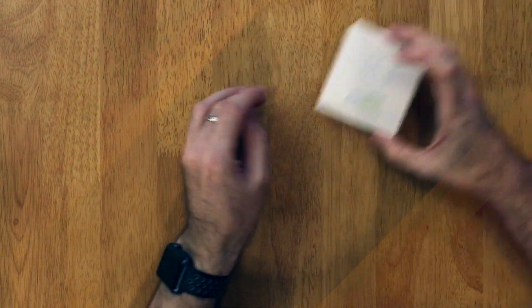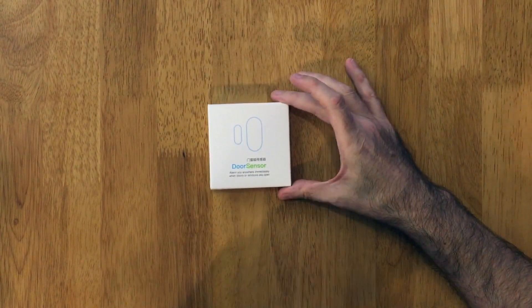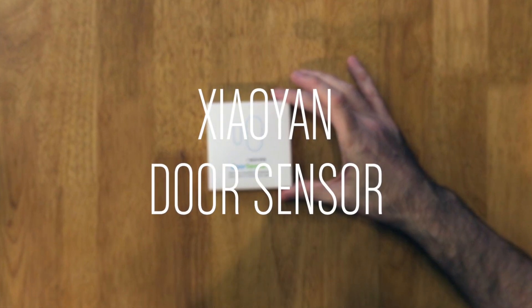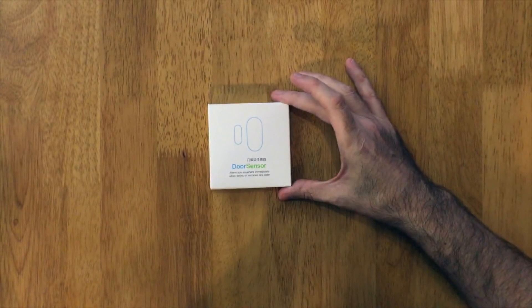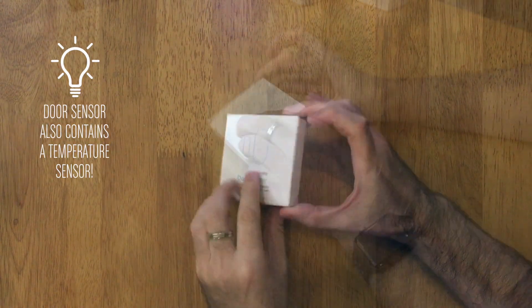Moving on to the second of our five devices, we've got the Xiaoyan door sensor. It's more than just a door sensor because it actually contains a temperature sensor as well, which could be quite handy for some people.